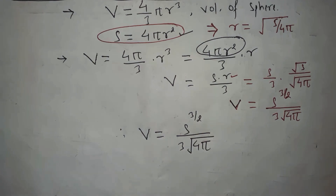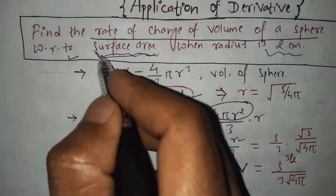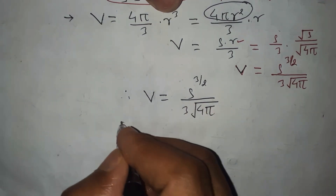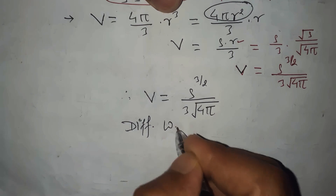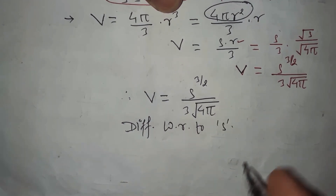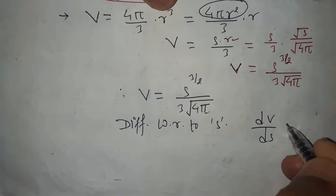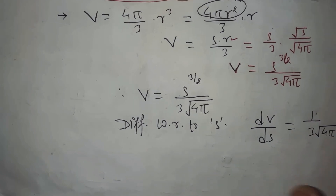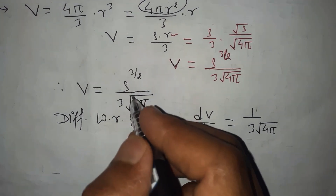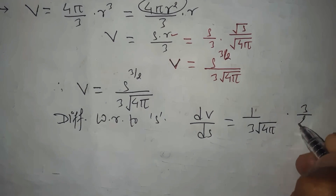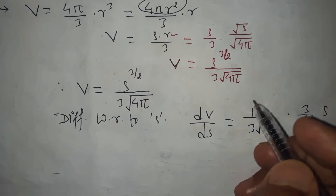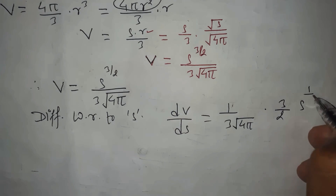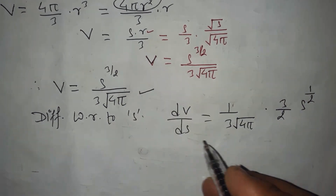Let's differentiate this volume with respect to the surface area, since our question asks us to differentiate with respect to S. Differentiating V = S^(3/2) / (3√(4π)) with respect to S, we get dV/dS = (1 / (3√(4π))) × (3/2) × S^(1/2). The 1/(3√(4π)) is a constant and the derivative of S^(3/2) is (3/2)S^(1/2).